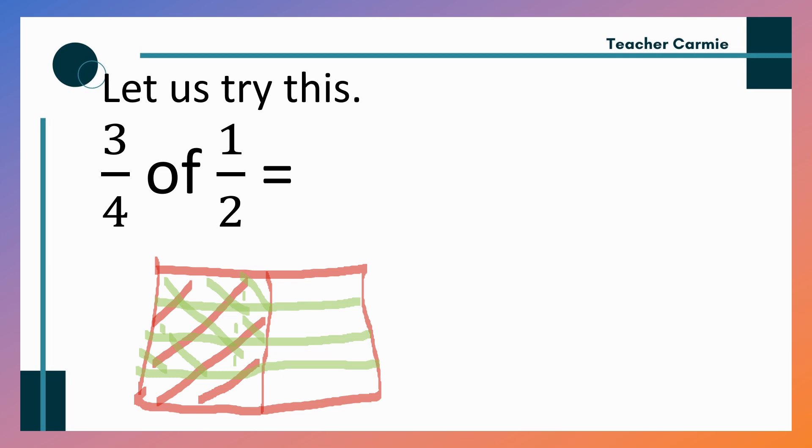Bilangin natin. Ilan yung may double shade? So, 1, 2, 3. 3. Over. Ilan ang subdivision lahat? 1, 2, 3, 4, 5, 6, 7, 8. 3, 8. Kailan po ba natin, lowest term? Hindi na. So, let us solve. 3 fourths times 1 half. Numerator to numerator. 3 times 1. 3. Denominator to denominator. 4 times 2. 8. So, again, same answer.